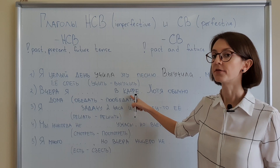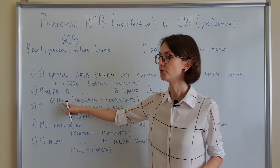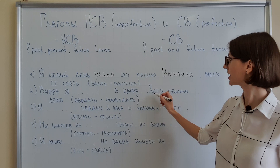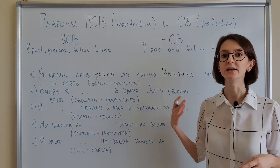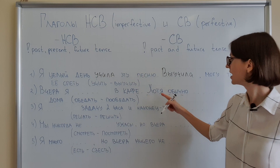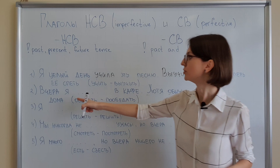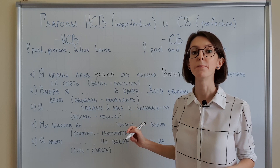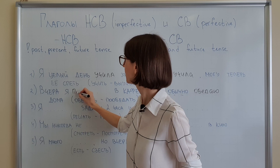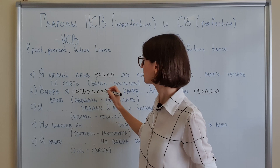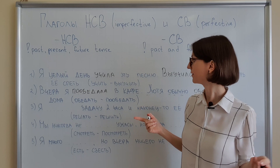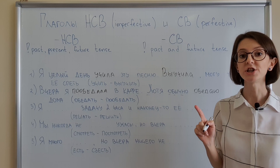Next exercise: Вчера я [verb] в кафе, хотя обычно дома. Let's start with the second part — обычно means the action happens regularly, so this is NSV: я обычно обедаю дома. And for the first part — вчера, one-time past action with a result: вчера я пообедала в кафе. Full sentence: Вчера я пообедала в кафе, хотя обычно я обедаю дома. Yesterday I had lunch in a cafe, although usually I eat at home.